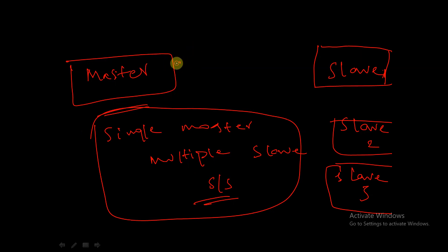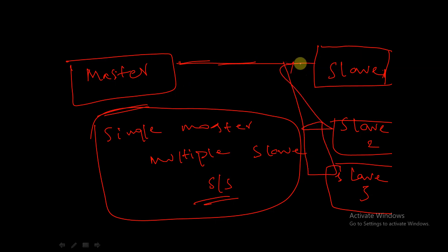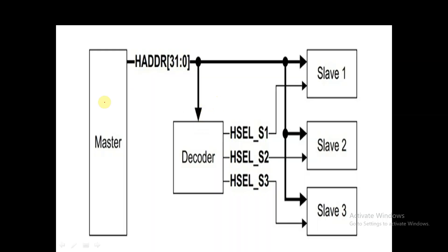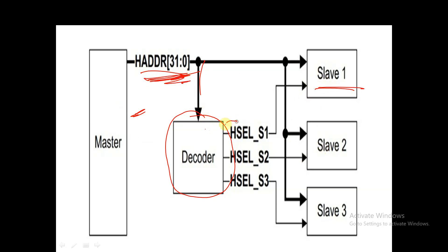Let's see how a single master is communicating with these 3 slaves. In a single master and multiple slave system, we have a decoder which is used to select multiple slaves. The address information is given as an input to the decoder, and according to the address information, the slave is being selected by the HSELx select signal.